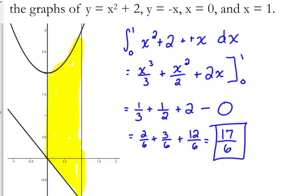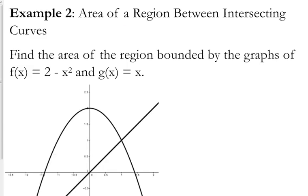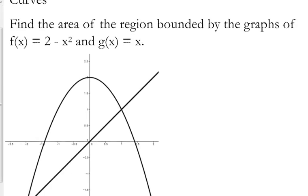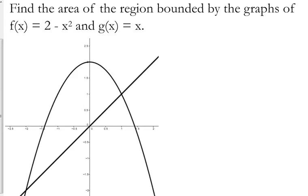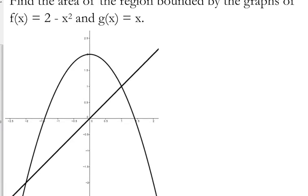17 over 6 is the area between these two curves from 0 to 1. Okay, let's look at example 2: the area of a region between intersecting curves. The difference between example 1 and example 2 is that in example 1, they essentially gave us the bounds of our integration — they told us to go between 0 and 1.